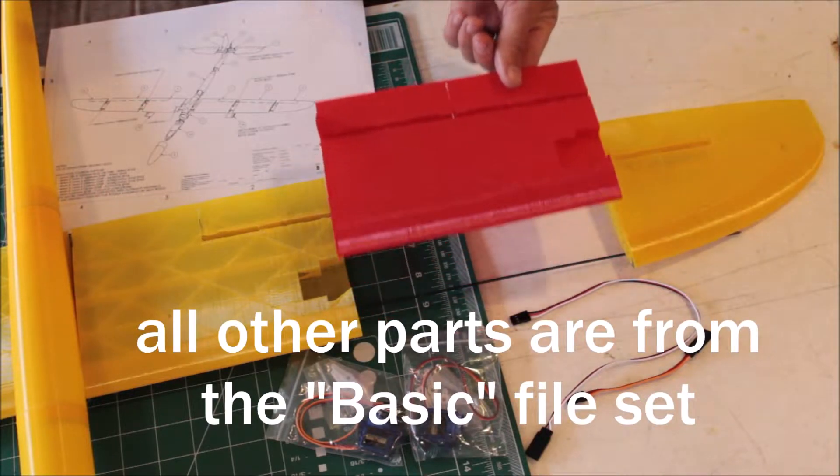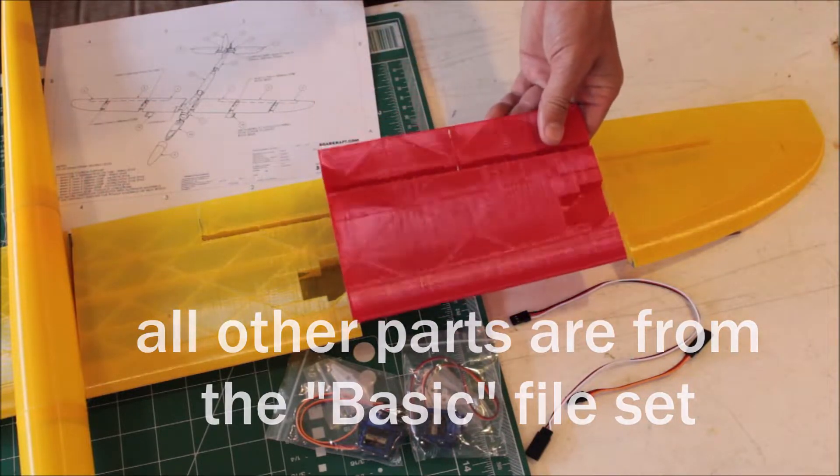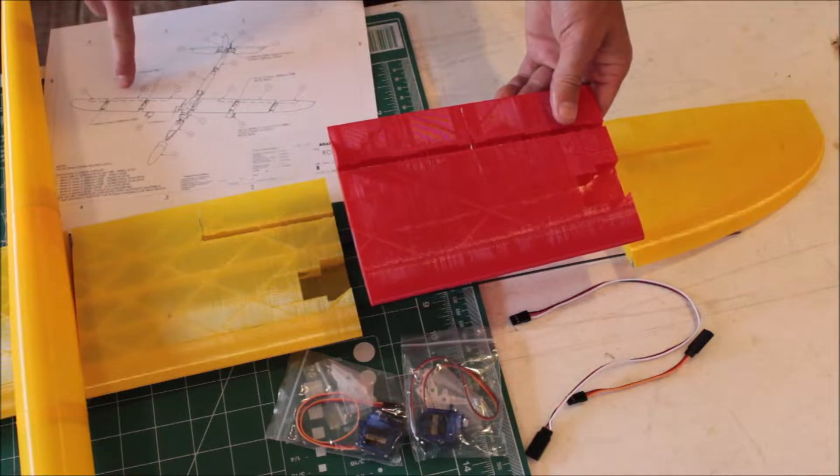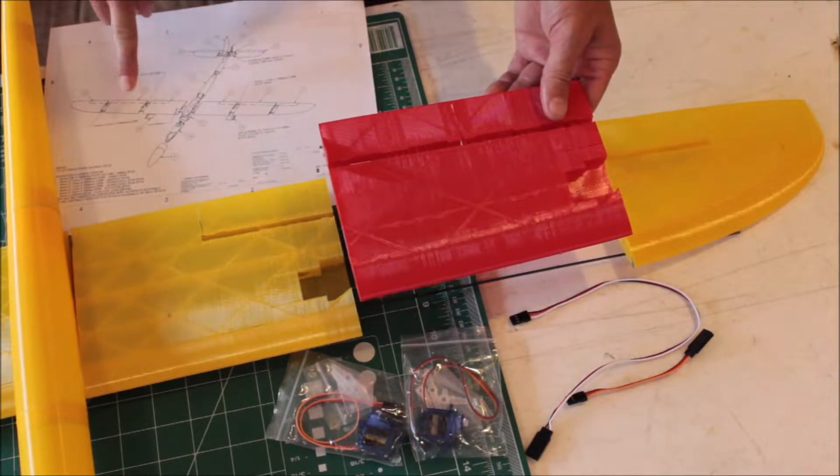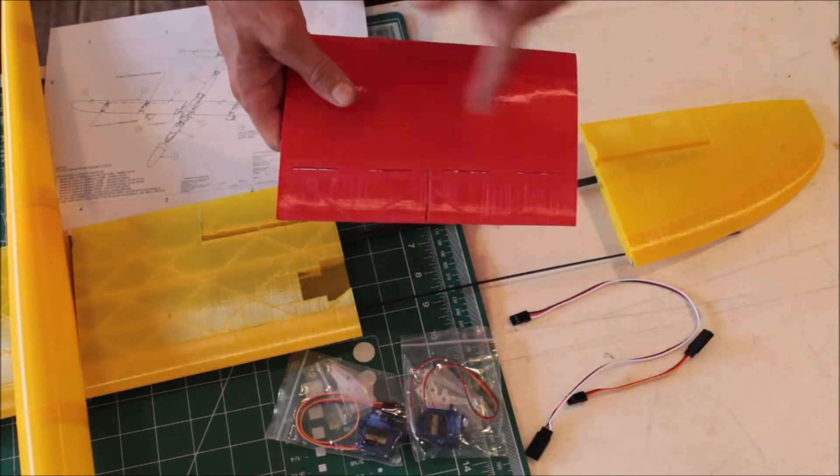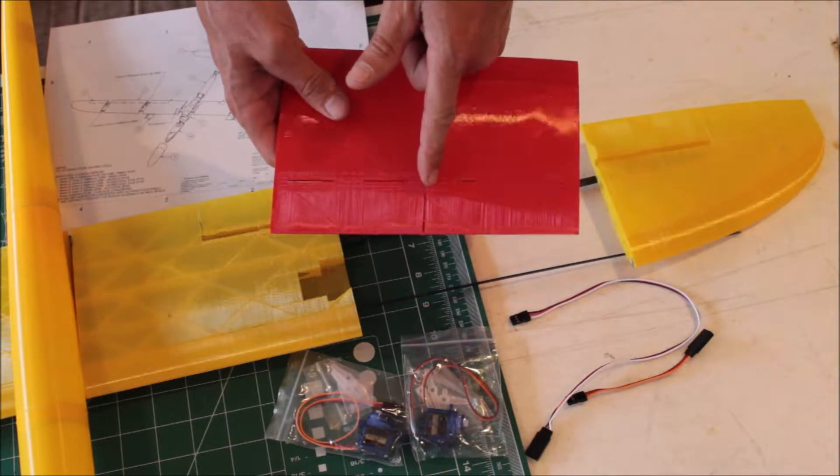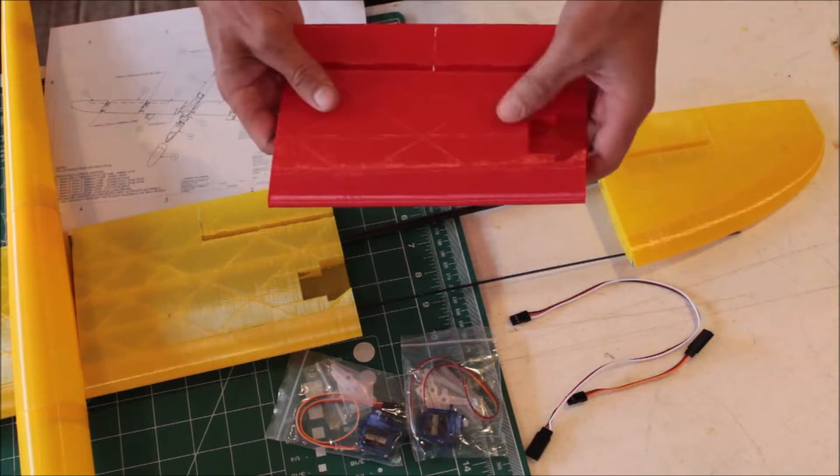For a servo wing option, the mid panel, so number two and number five, are going to be different. They have a seam in the center and they have a pocket for the servo.